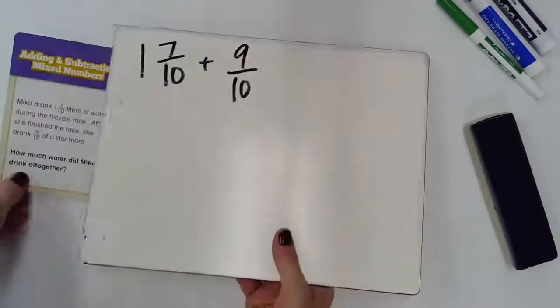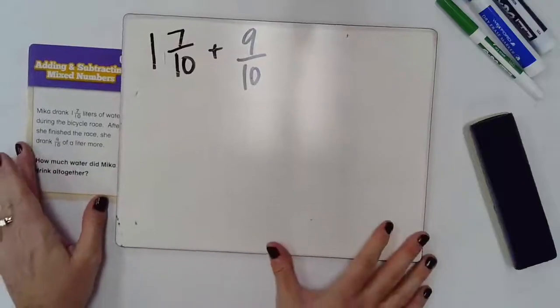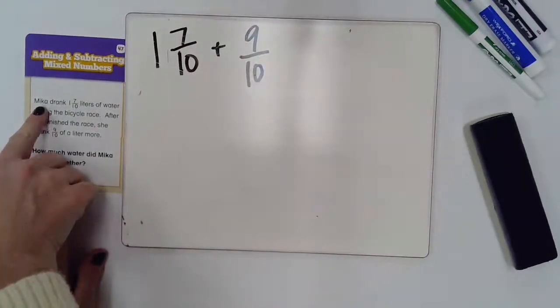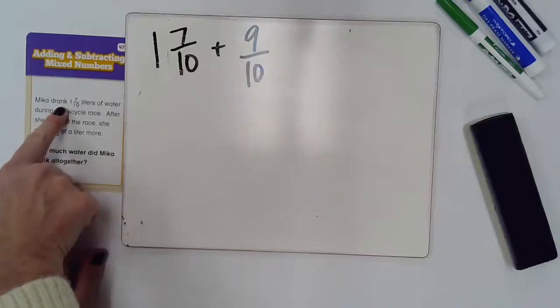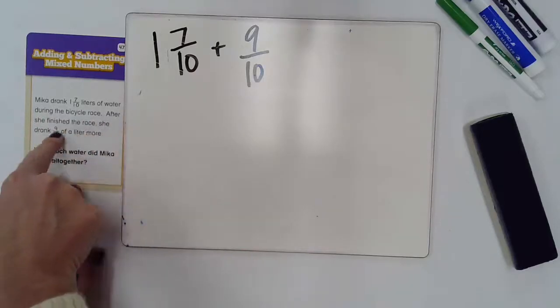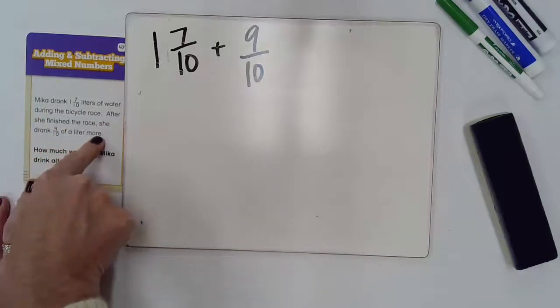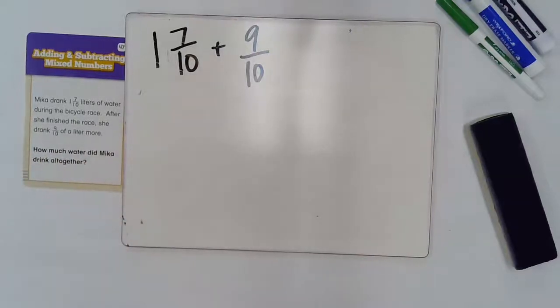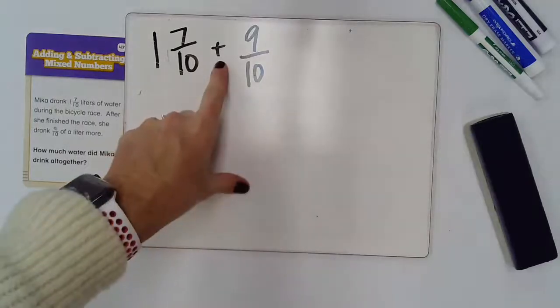So, we are going to look at some word problems here to help us. Here, we have someone who has drank 1 and 7 tenths liters of water during a bicycle race. After she finishes the race, she drank 9 tenths of a liter more. How much does she drink all together? So, this problem is about drinking water. We know that we drank some water, we stopped it and then we drank some more water. So, we're adding, we're putting these things together.